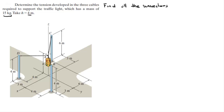Now there are four unit vectors: one going towards C, one going towards D, one going towards B, and one holding the light going straight down. To find all these unit vectors, the first thing we need to do is find all the points involved, which are A, B, C, and D.